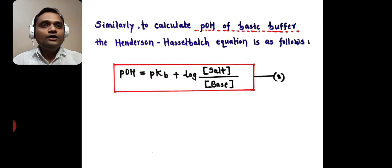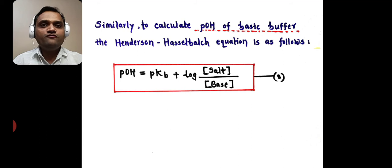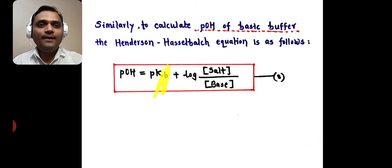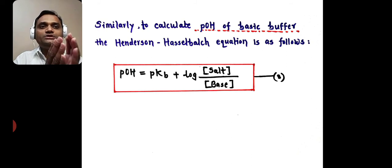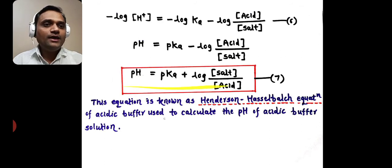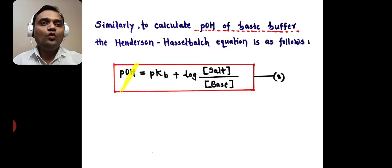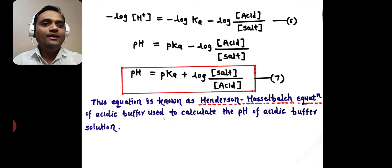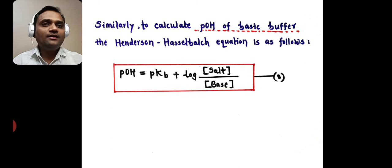Similarly, to calculate the pH of a basic buffer, the Henderson-Hasselbalch equation is: pOH = pKb + log([salt] / [base]). When we compare equations 7 and 8, instead of pH there comes pOH, instead of pKa there comes pKb, salt remains the same, and instead of acid there comes base.